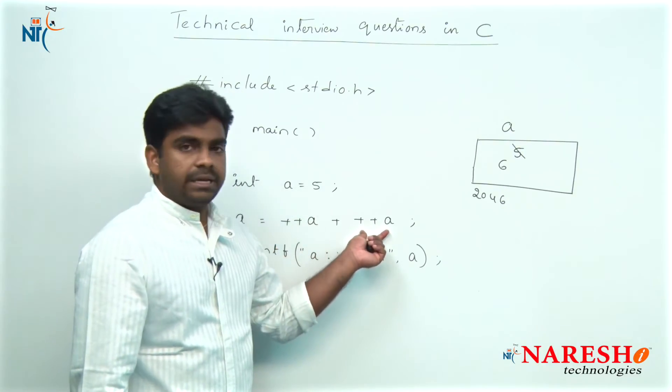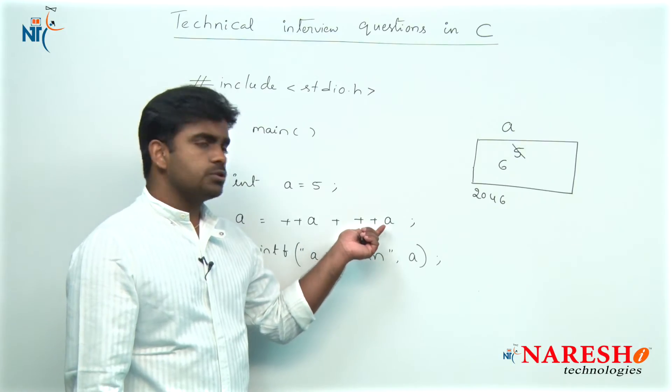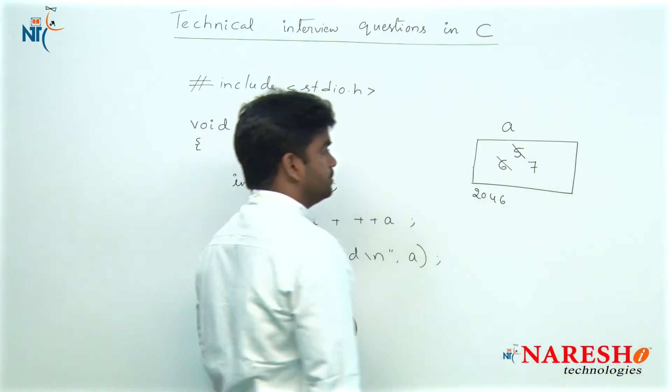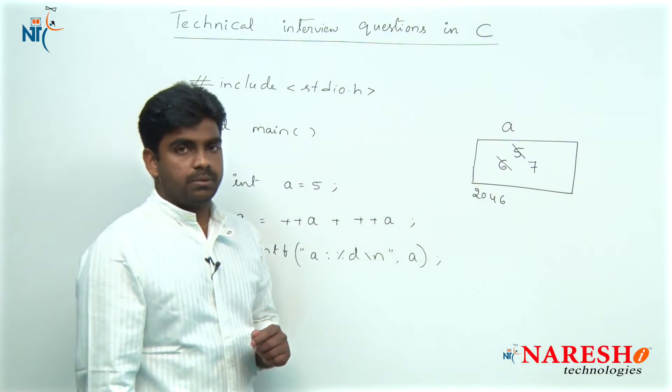Here one more pre-increment operator is there, that is also variable a only. So increase once again, 6 becomes 7, 6 becomes 7.